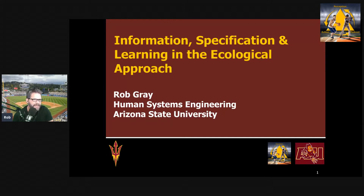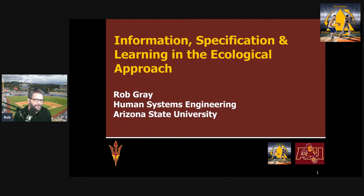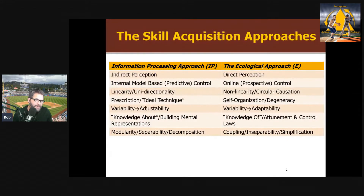Hi everyone. This is Rob Gray from ASU and the Perception Action Podcast. In this video, I want to continue talking about some of the key terminology and ideas within the ecological approach to skill acquisition. I want to focus on the idea of information and contrast the different types of information, the difference between an information source and a cue, the issue of specification, and how learning occurs within the ecological approach.